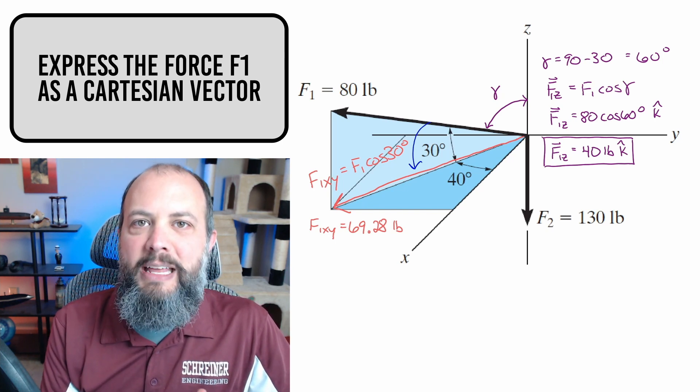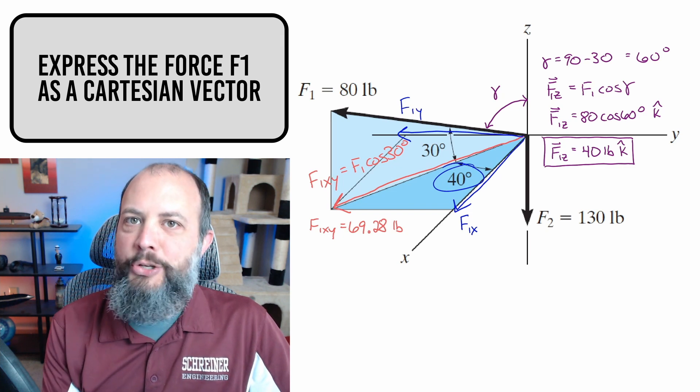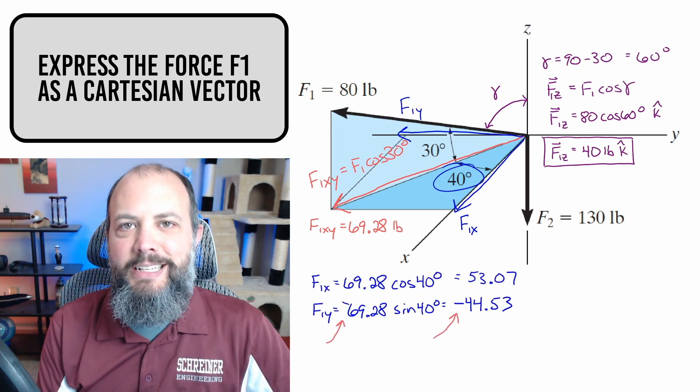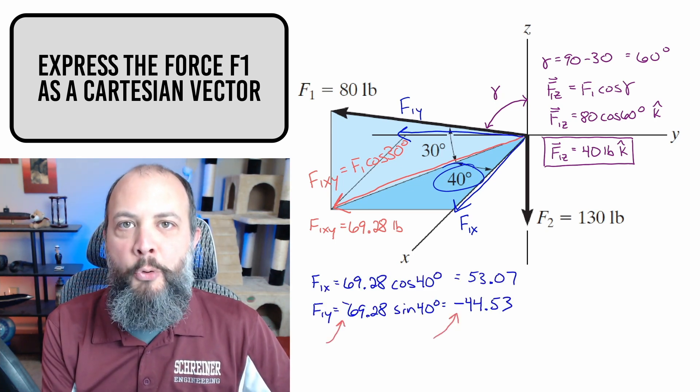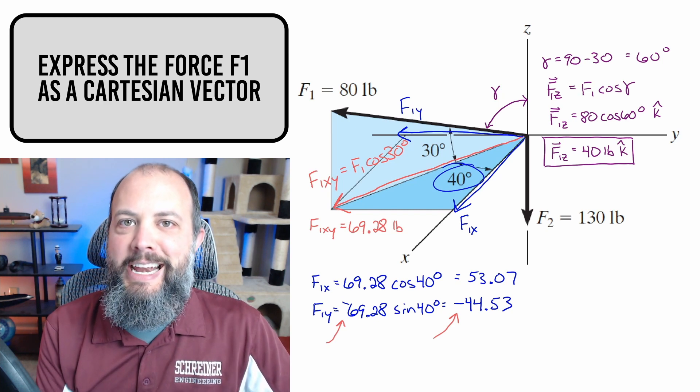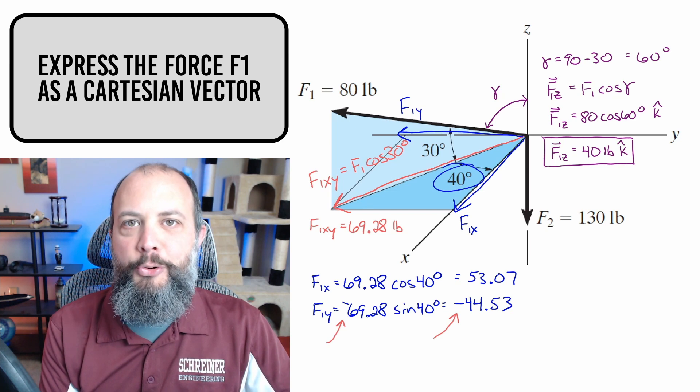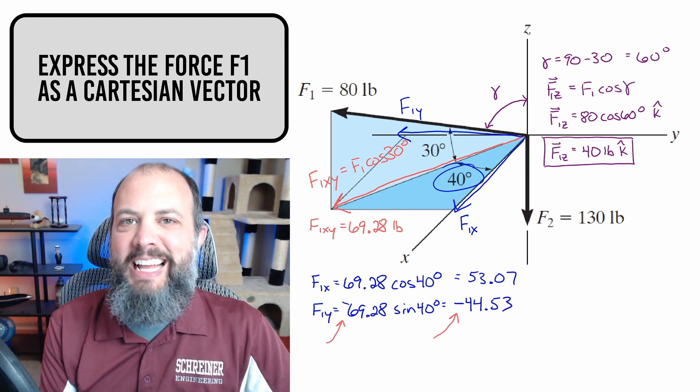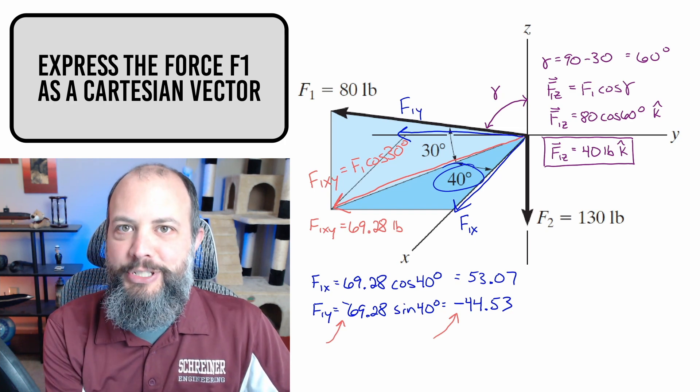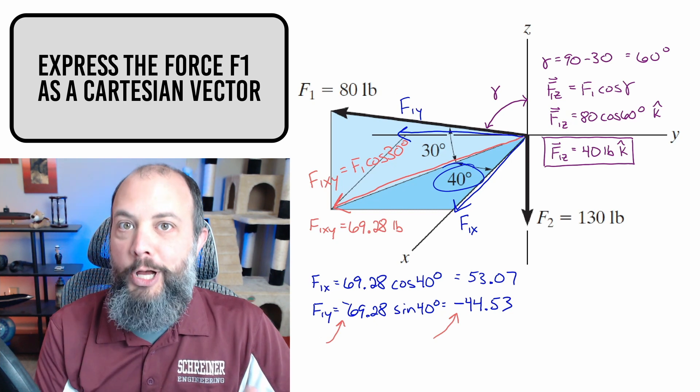And it works out to be 69.28 pounds. You can then get F1 X and F1 Y using the 40 degree angle and the cosine or sine as appropriate. Since the X axis is adjacent to the 40 degree angle, I use cosine for the X component. And since the negative Y axis is opposite of the 40 degree angle, I'm using sine, but I'm also using a negative value. F1 X, Y is pointing to the left, which is the negative Y direction.